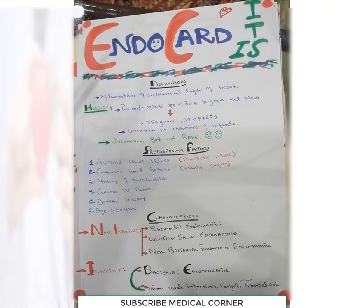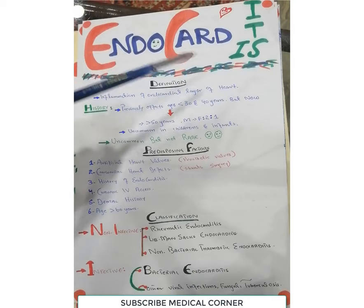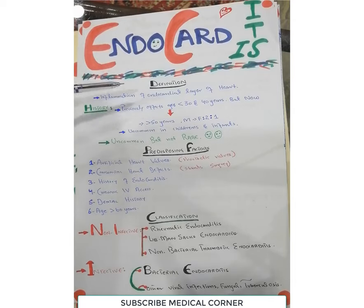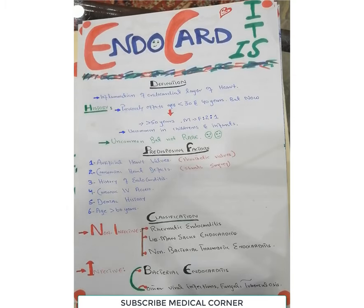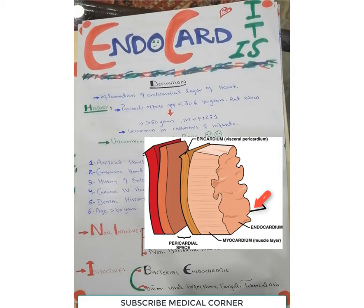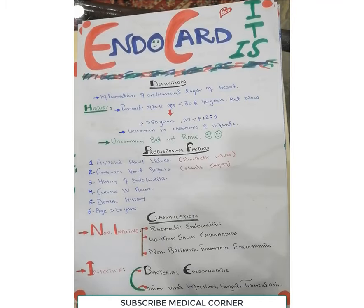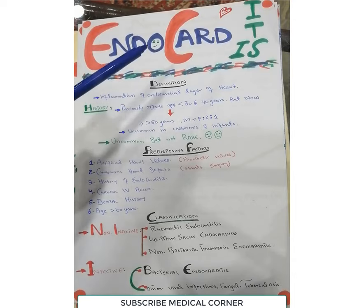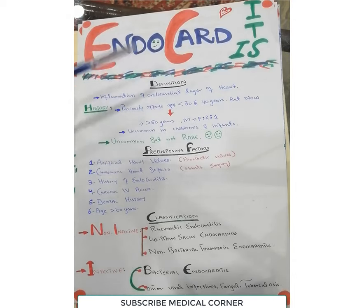Welcome to Medical Corner. Today we are going to start our next very important topic of special pathology, which is endocarditis. Endocarditis is the inflammation of the endocardial layer of the heart. The heart consists of three layers: number one, endocardium, which is the innermost layer; second, myocardium; and the outermost is pericardium. Inflammation of the innermost layer of the heart is known as endocarditis.